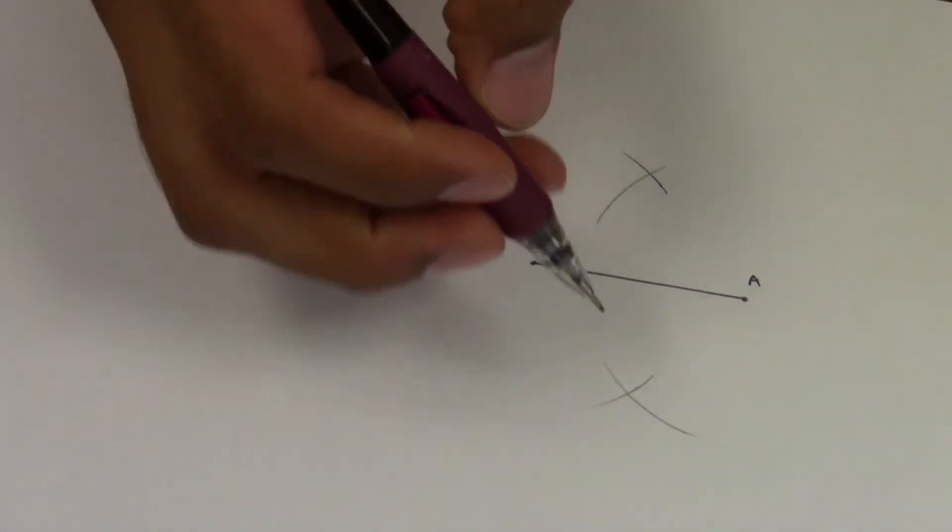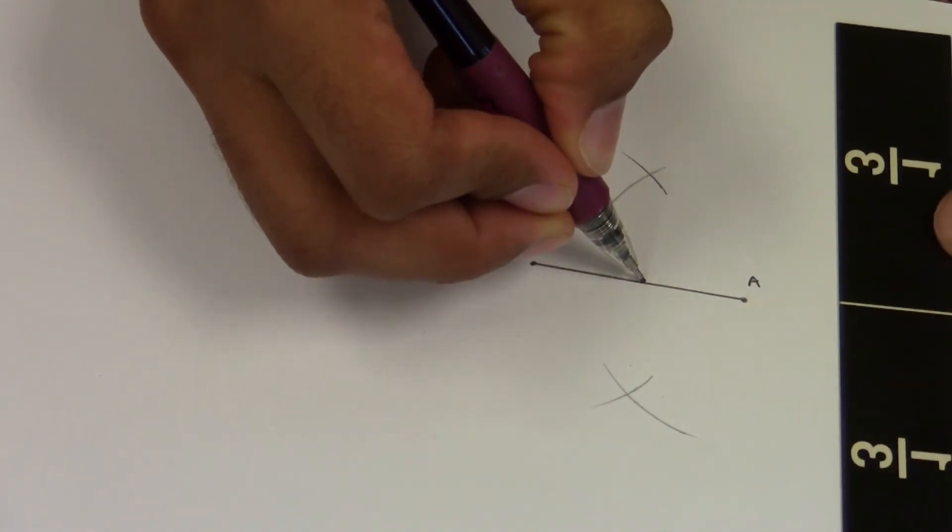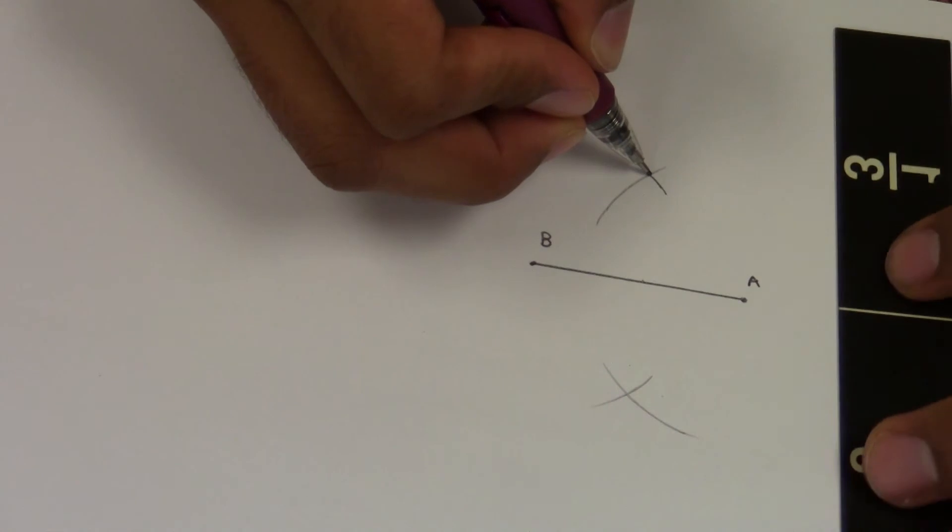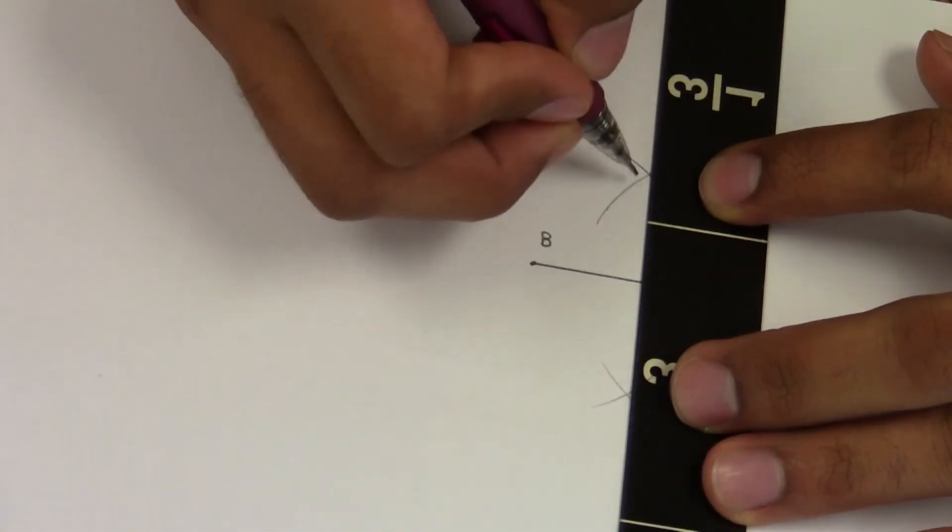Now, when we made the midpoint, we only cared about this right here. This time, by actually connecting my two intersections, I've made a line that is perpendicular, and I show that by my symbols.